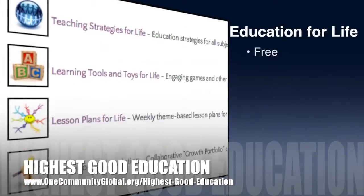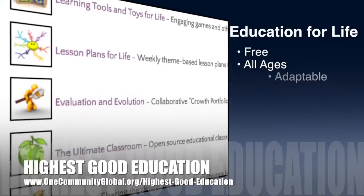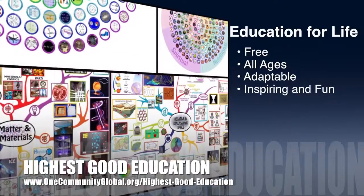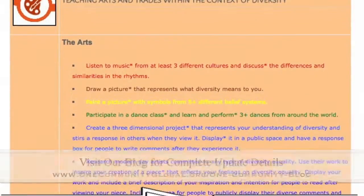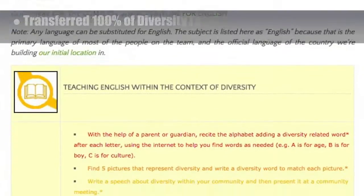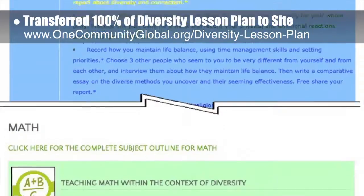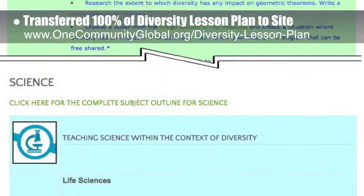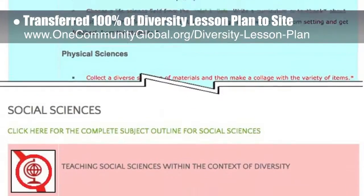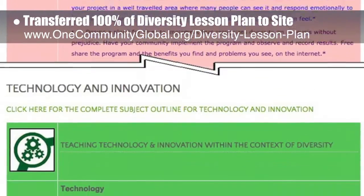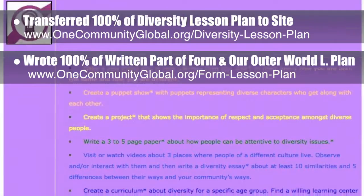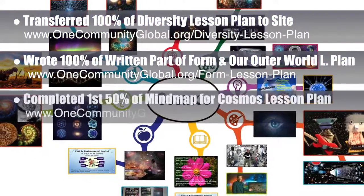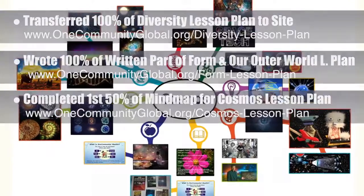One Community's approach to highest good education is open source and free shared, designed for all age groups, adaptable to any schooling environment, inspiring and fun for all participants — a learner, teacher, collaborative — and it includes U.S. Common Core standards. This week, the core team transferred all of the written content for the diversity lesson plan to the website. This lesson plan is purposed to teach all subjects to all learning levels in any learning environment using the central theme of diversity. Behind the scenes, we completed 100% of the written part of the 'Form in Our Outer World' lesson plan, and completed the first 50% of the mind map for the Cosmos lesson plan, bringing it to 50% complete.